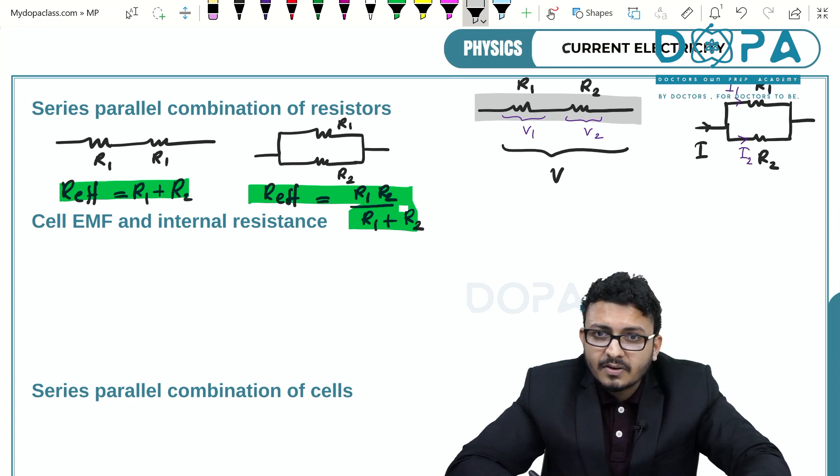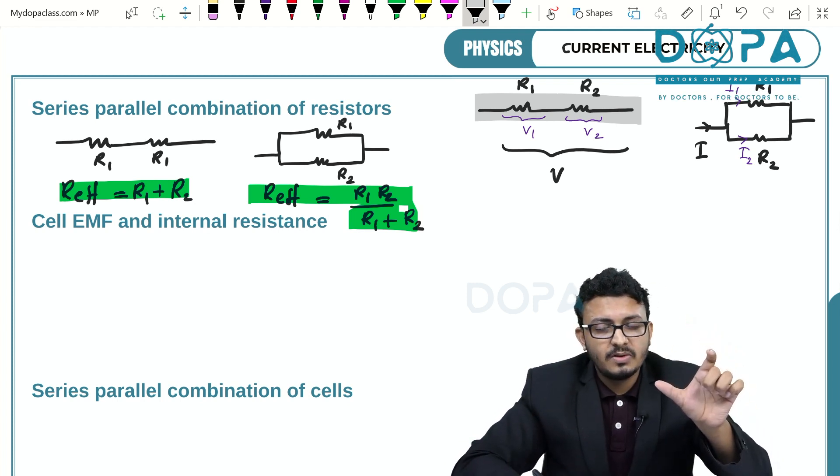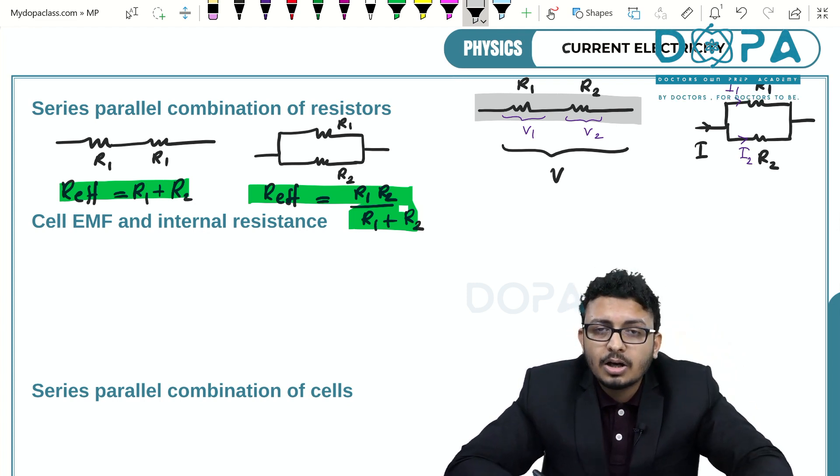Then what is the potential difference across R1, which is V1? What is the potential difference across R2, which is V2?